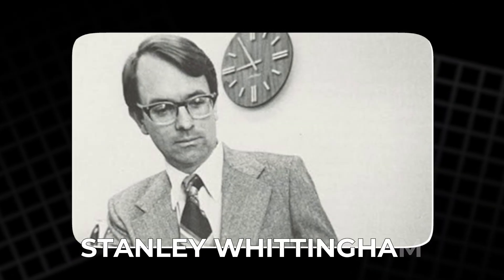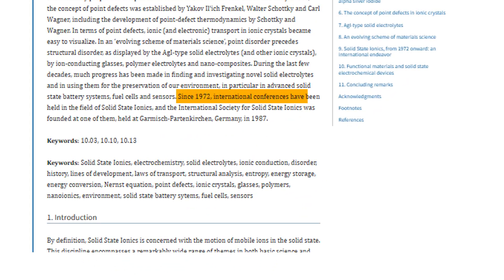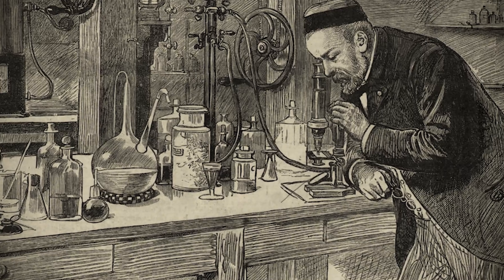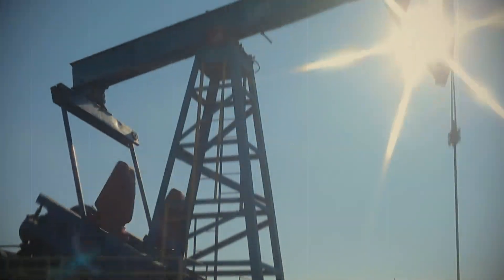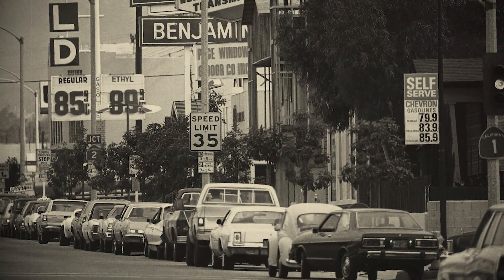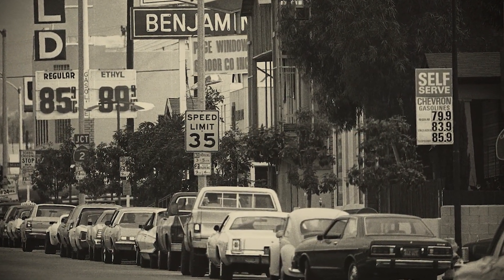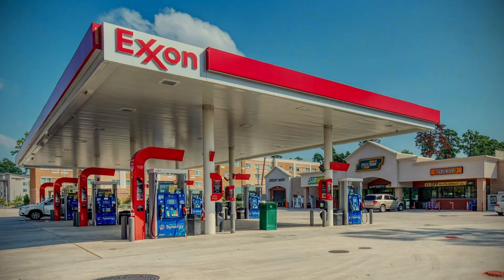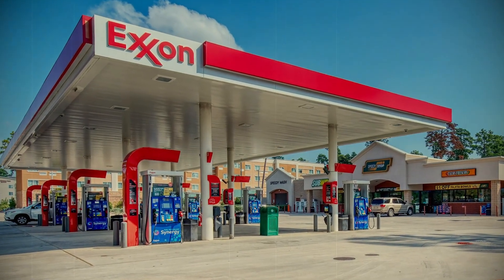Stanley Whittingham, a British scientist at Exxon, was one of the first to see a path forward. In 1972, he studied compounds that could store and release energy by holding ions within their structure. Then came the oil crisis. Prices spiked, and drivers across America waited in endless lines for fuel. Exxon, shaken by the prospect of scarcity, suddenly backed Whittingham's work.